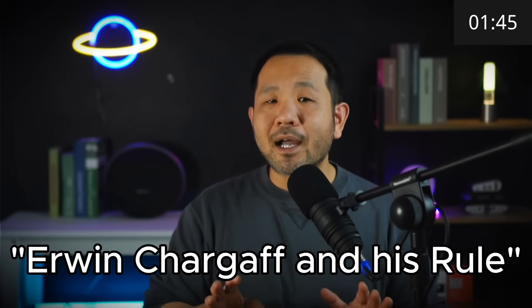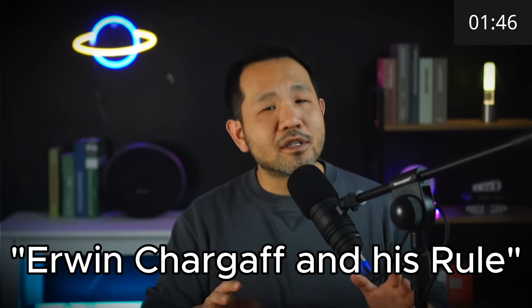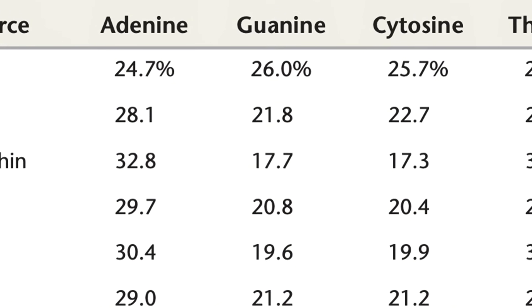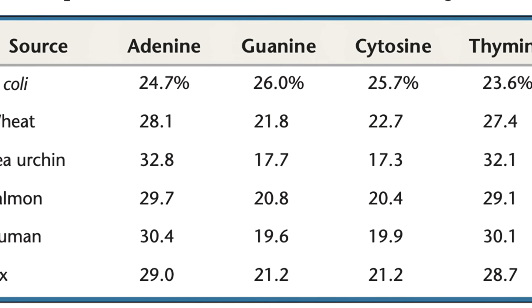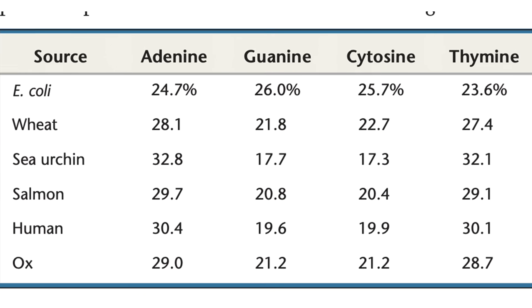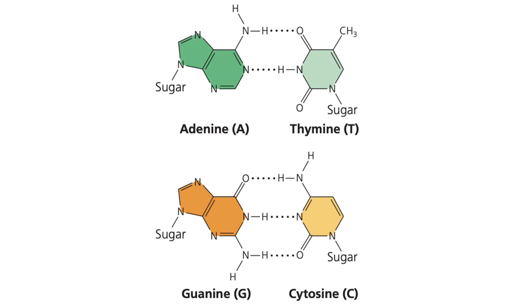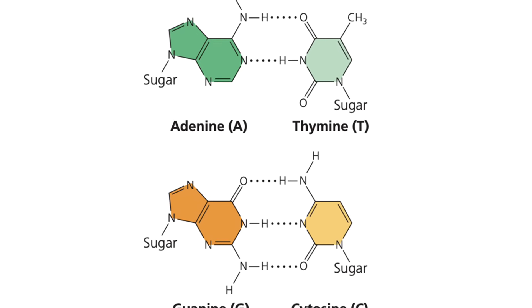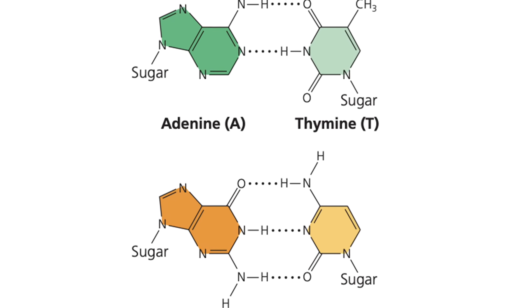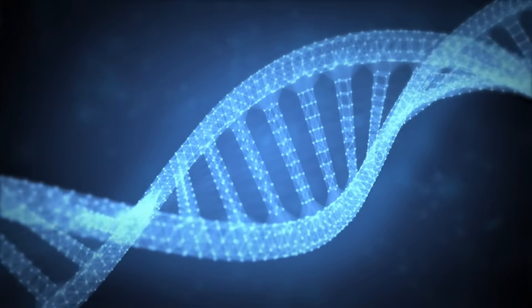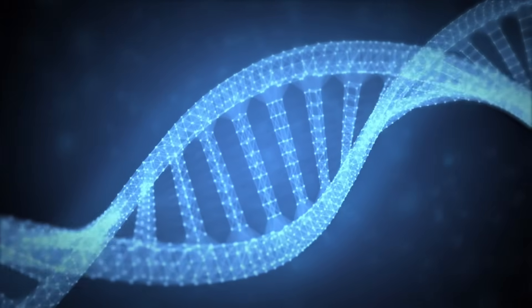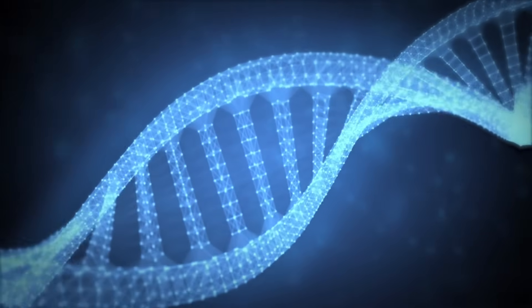The third important experiment was conducted by Erwin Chargaff. AP Bio doesn't go into the specifics of how he ran his experiments, but rather the results, which indicated that in DNA, adenine and thymine always occurred in equal amounts, while guanine and cytosine occurred in equal amounts. This is a reflection of DNA's complementary base pairing, which was proposed by Watson and Crick in their paper.